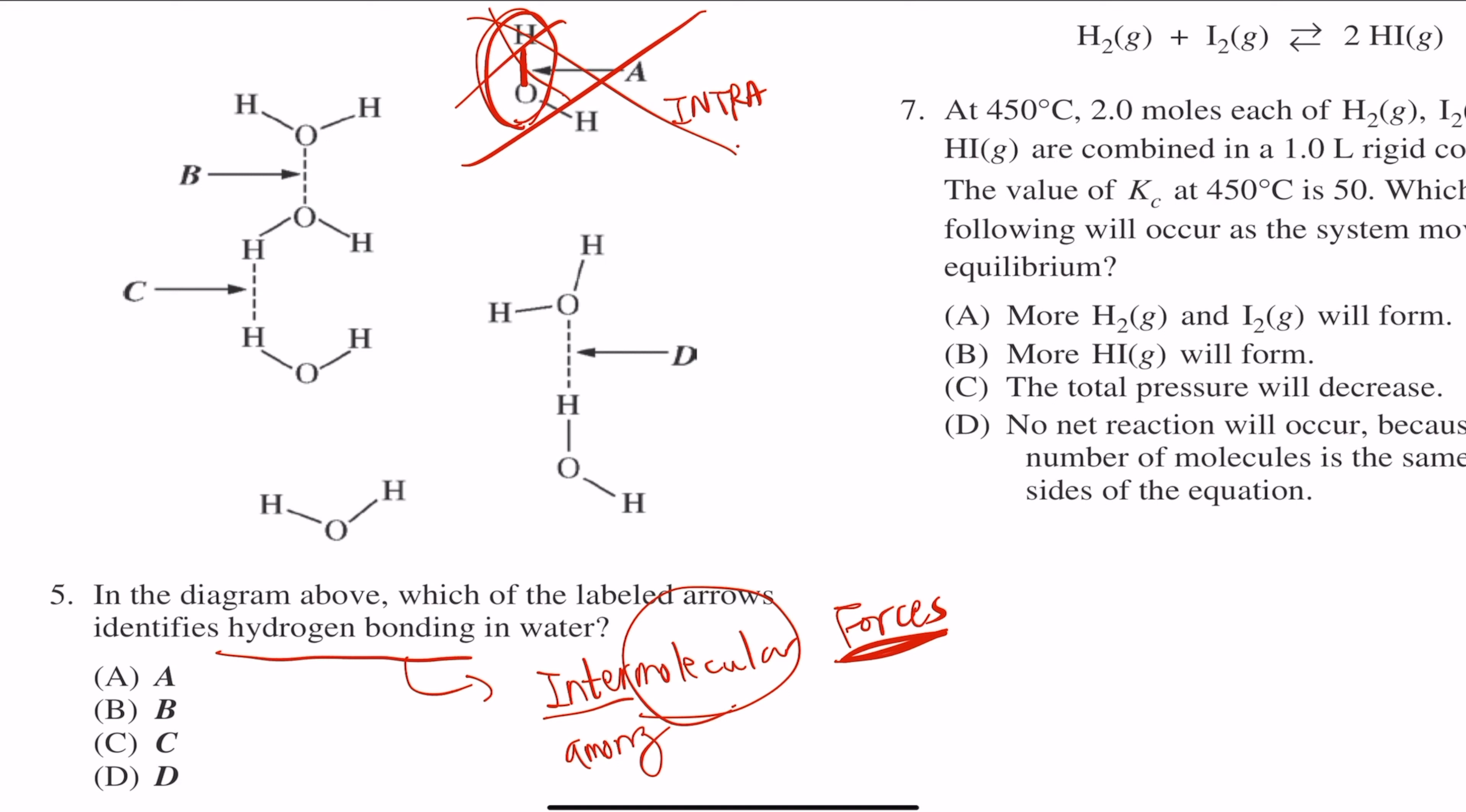Let's take a look. I know the answer is D, so let me explain why all the other ones are wrong. Take a look at B - that's between oxygen and oxygen. That doesn't involve hydrogen, so B is off.